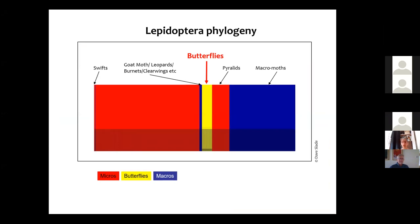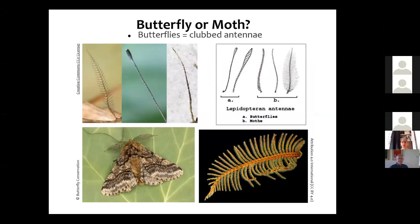So there isn't really any clear difference between butterflies and moths. Butterflies have clubbed antennae — you can see the middle image is a butterfly antenna — whereas moths can have either very thin antennae or some male moths have fabulous feathery antennae by which they can sense pheromones.